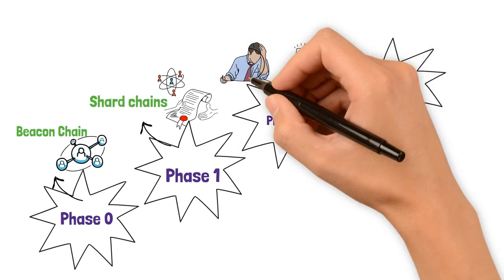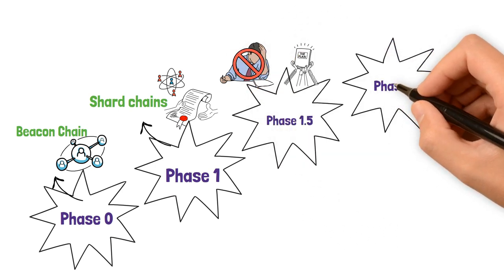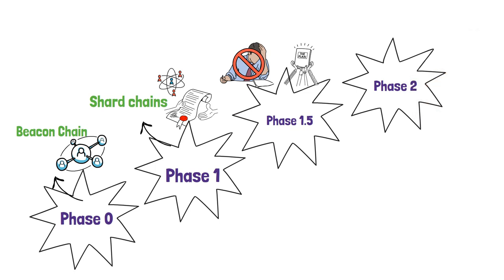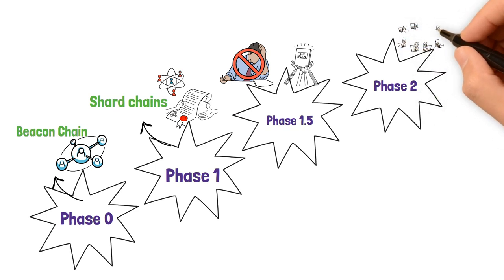This step minimizes disruption and maintains compatibility with the current Ethereum ecosystem. Finally, Phase 2 will fully implement shard chains and enable the execution of more complex applications on Ethereum 2.0. Although Phase 2 is still in development, it holds immense potential for the network's future growth and innovation.